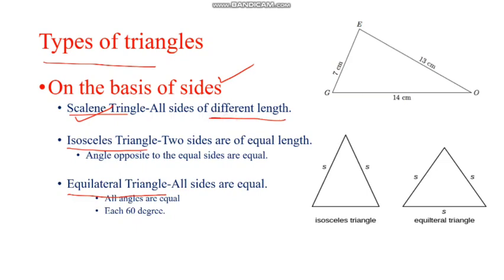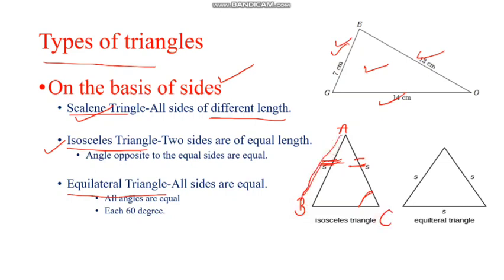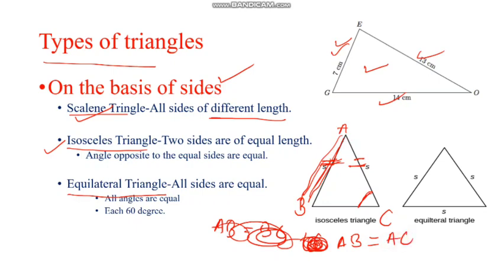Both sides are of different length — just look at the figure. If we have two sides of equal length, then we have opposite angles equal. So, if AB is equal to AC, then the opposite angles are equal. That means angle C is equal to angle B.